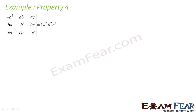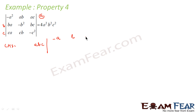Observing the structure: all elements in the first row have a common factor of a, all elements in the second row have b, and all elements in the third row have c. So we take a, b, c out from the respective rows. Dividing row 1 by a: (−a²/a = −a), (ab/a = b), (ac/a = c). Dividing row 2 by b: (ba/b = a), (−b²/b = −b), (bc/b = c). Dividing row 3 by c: (ca/c = a), (cb/c = b), (−c²/c = −c).